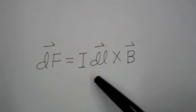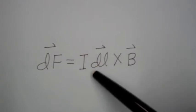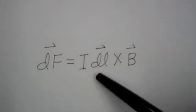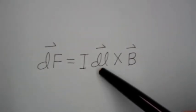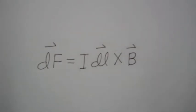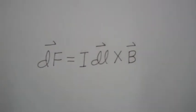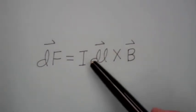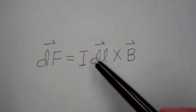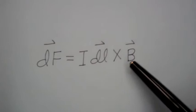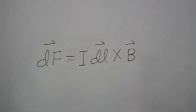So let's take a short segment of the wire of length DL, and let's turn that into a vector by giving it a direction, and the direction will be the direction of the current flowing in that segment of the wire. So the force on that segment of length DL will be the current flowing times the cross product of DL and the magnetic flux density.